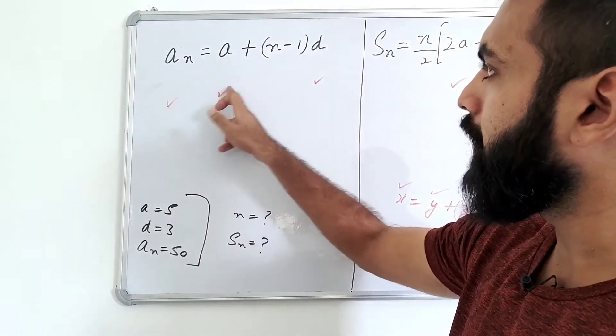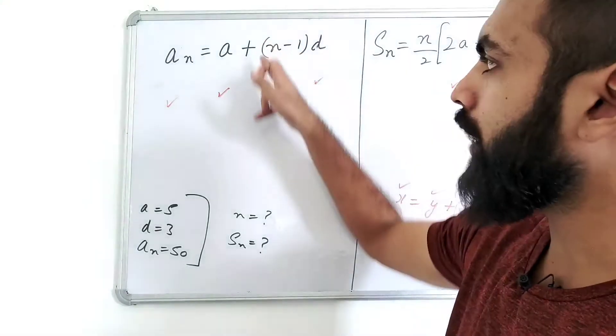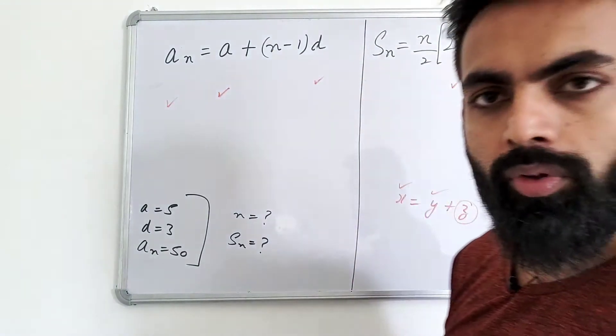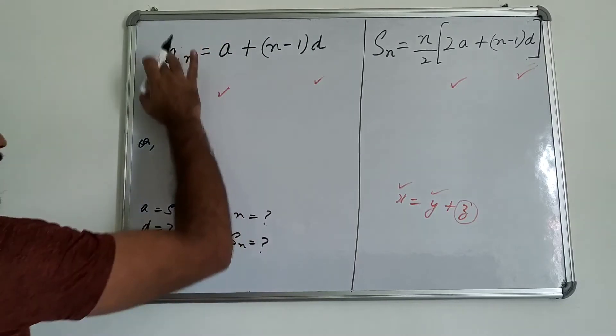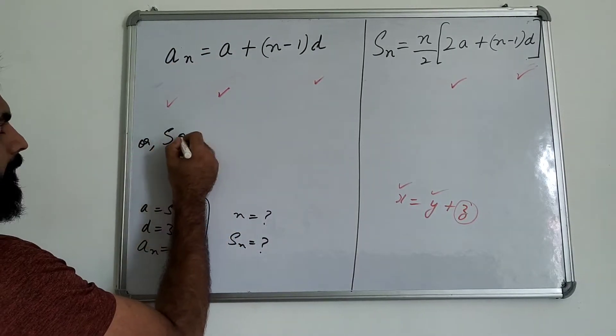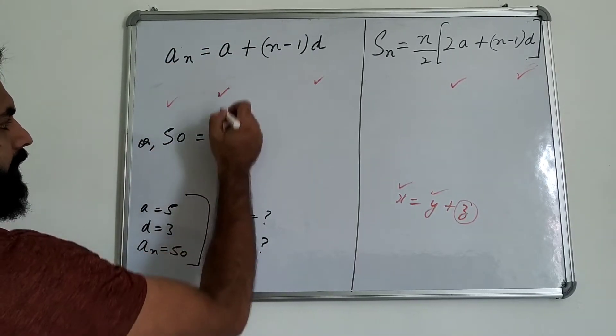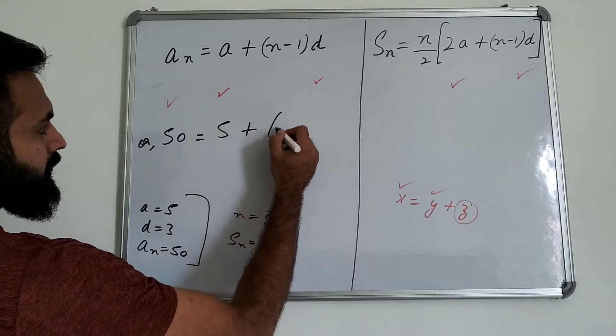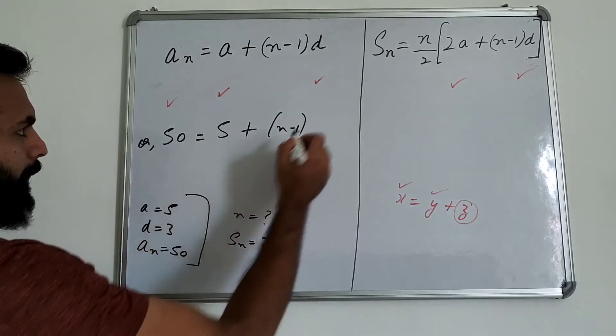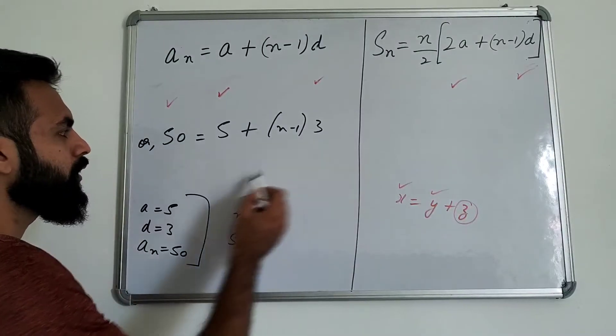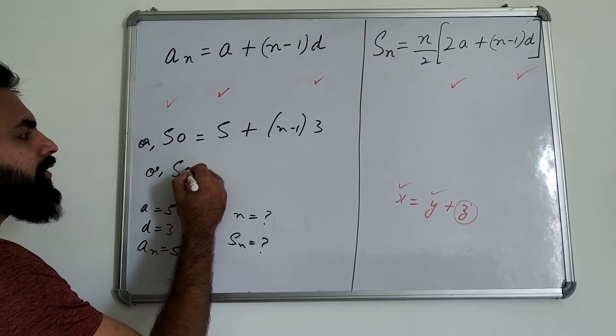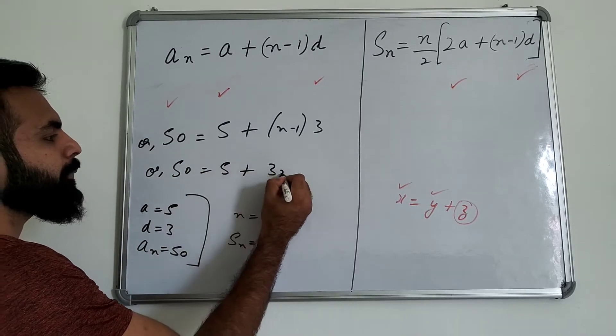Look, if I add value, add value, add value and add value, n will remain. The rest will remain in numbers. So what will you calculate? n. So I have done here. As an here, an is 50, 50 equals a value is 5 plus n minus 1 into d is 3. What will you do here? Of course, you will multiply it. Then you will have 50 equals 5 plus 3n minus 3.